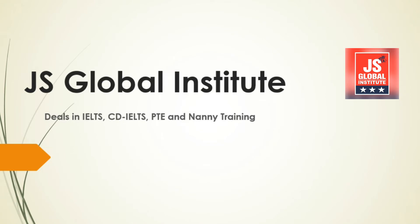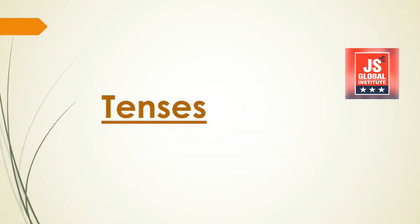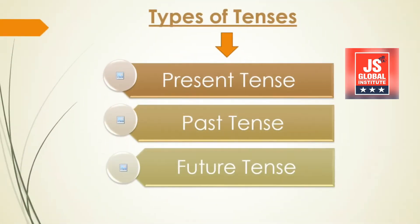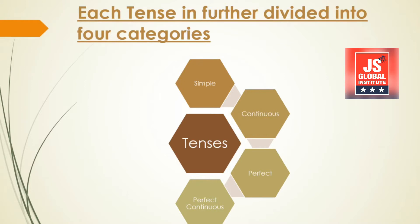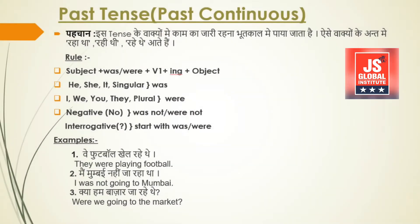In this video I will tell you how to translate past continuous tenses in Hindi and English. But before that, let us have a recap on the tenses. Tenses are divided into three types: present tense, past tense, and future tense. Each tense is further categorized into simple, continuous, perfect, and perfect continuous. In this video I am going to teach you about past continuous tense, so let us have a look at the basic rules we need to follow during translation.